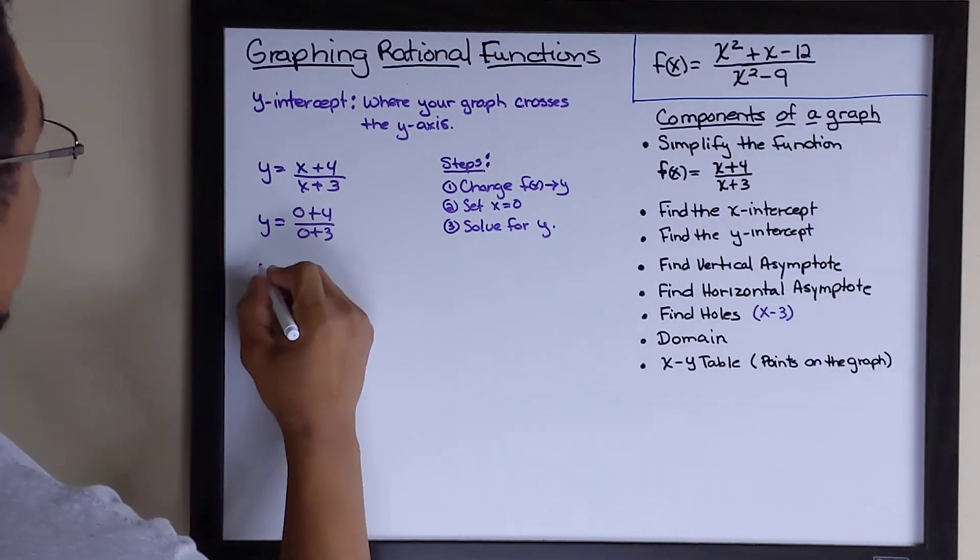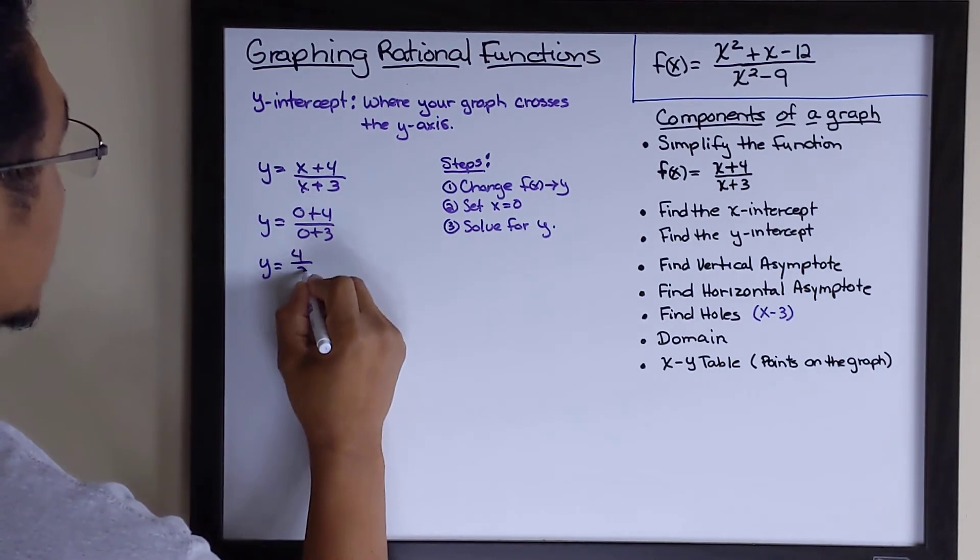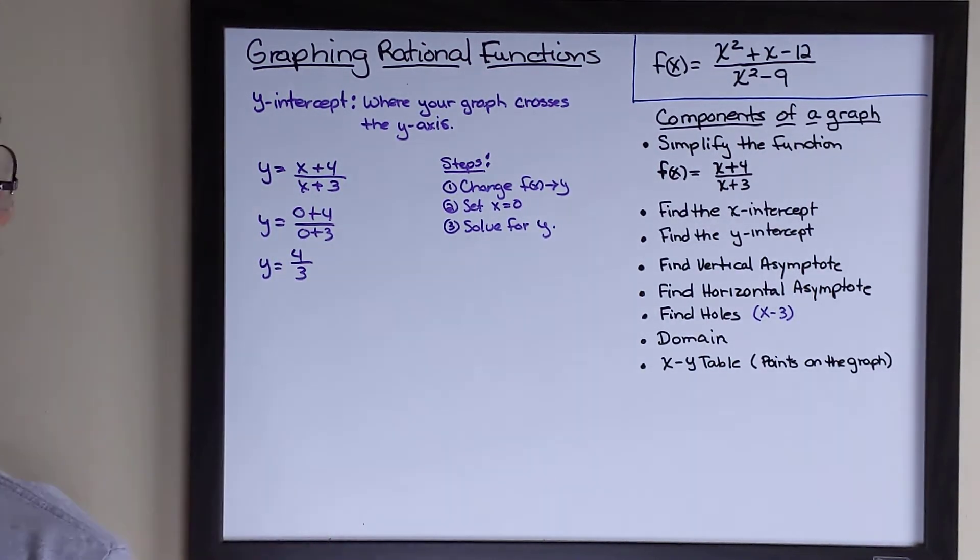Now, as we've done that, last step: solve for y. We're almost there. 0 plus 4 is 4, 0 plus 3 is 3, and here's our answer.